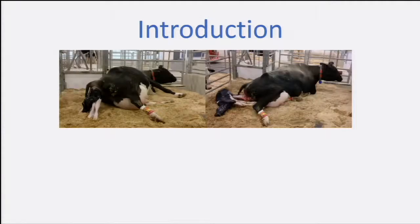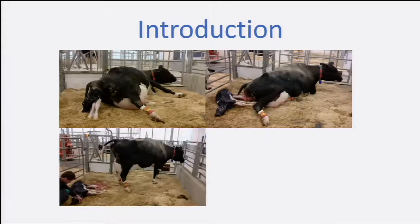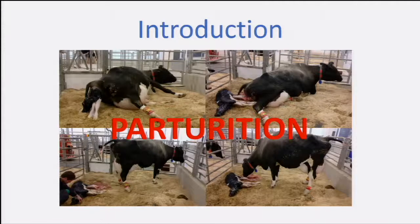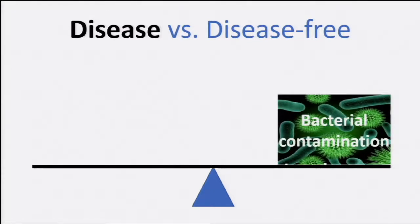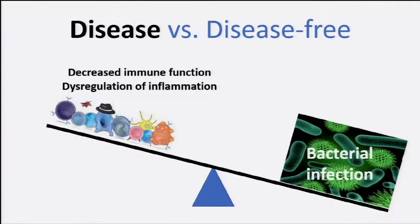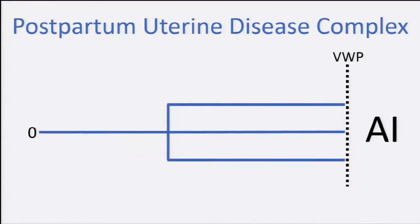The main risk factor associated with postpartum uterine disease is of course parturition, because the genital tract is open and the cow is having a metabolic change from not producing any milk to producing a lot of milk. It is normal to have bacterial contamination at the beginning of the postpartum period, but if we have a strong immune and inflammatory response, the cow is going to be healthy and will not develop postpartum uterine disease. But when we have a decreased immune function or a dysregulation of inflammation in the endometrium, this bacterial contamination is going to turn into a bacterial infection, and then we're going to have postpartum uterine disease.